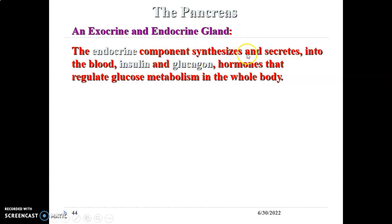The pancreas has an endocrine component that secretes hormones such as insulin and glucagon, which regulate glucose. When blood sugar is high, insulin is produced by the beta cells of the pancreas, released into blood, and reaches receptors mainly on skeletal muscle, adipose tissue, and the liver. Insulin tells these organs to store the high glucose — either as glycogen or as fat.